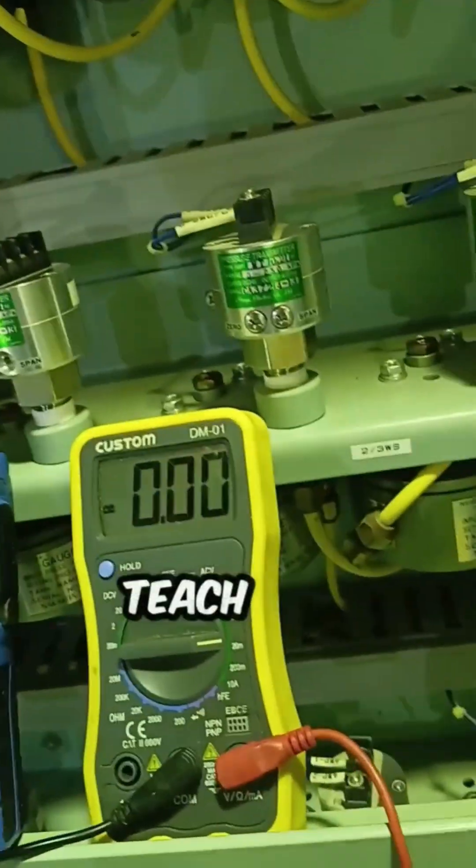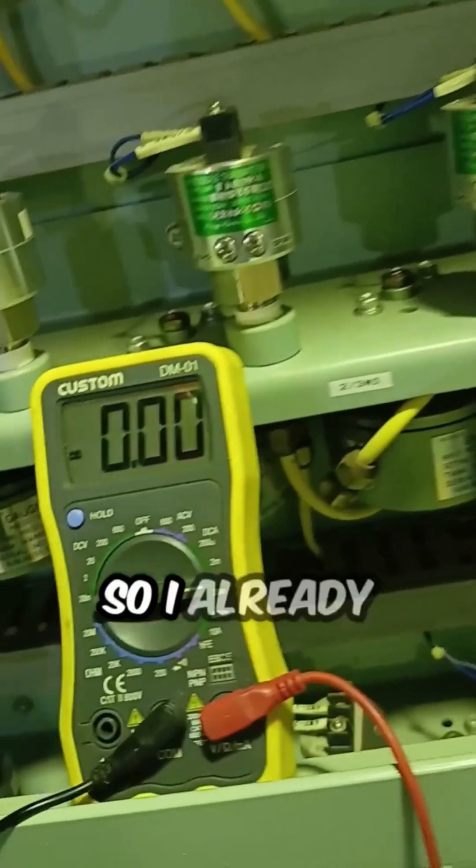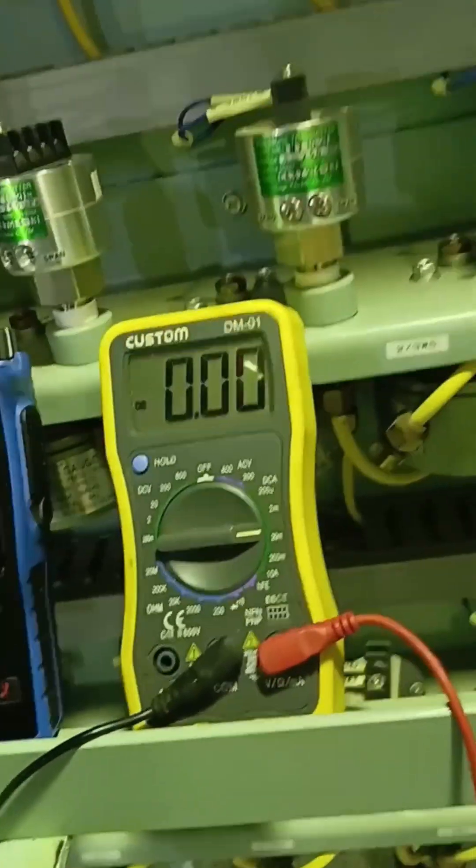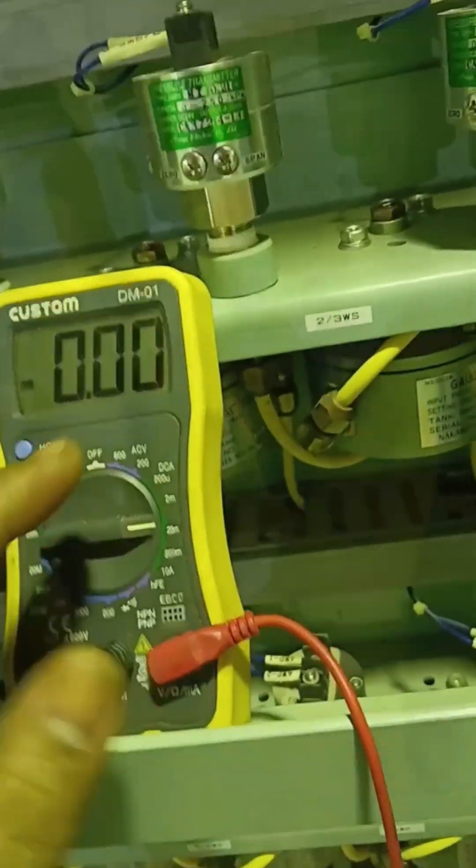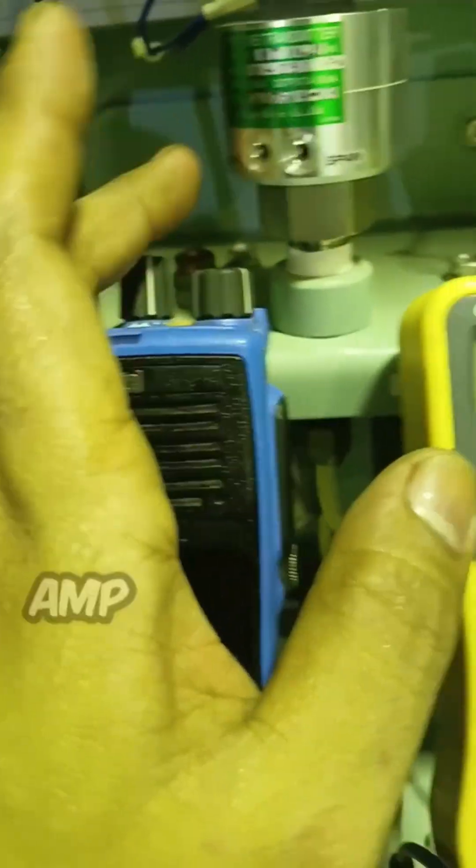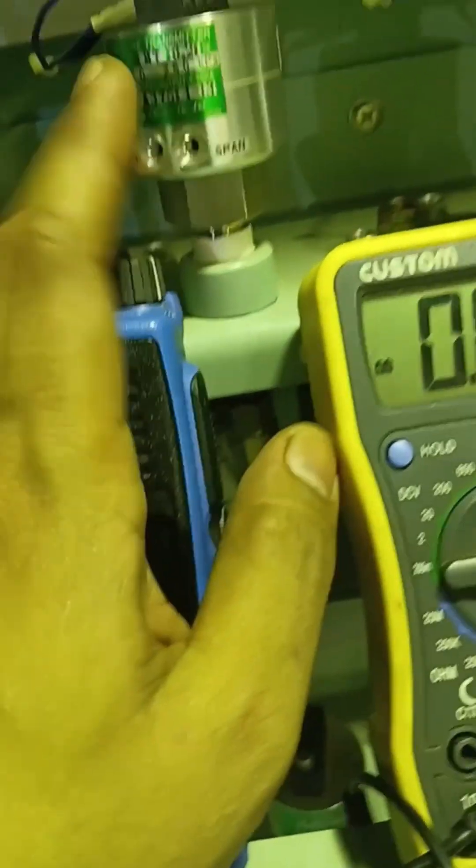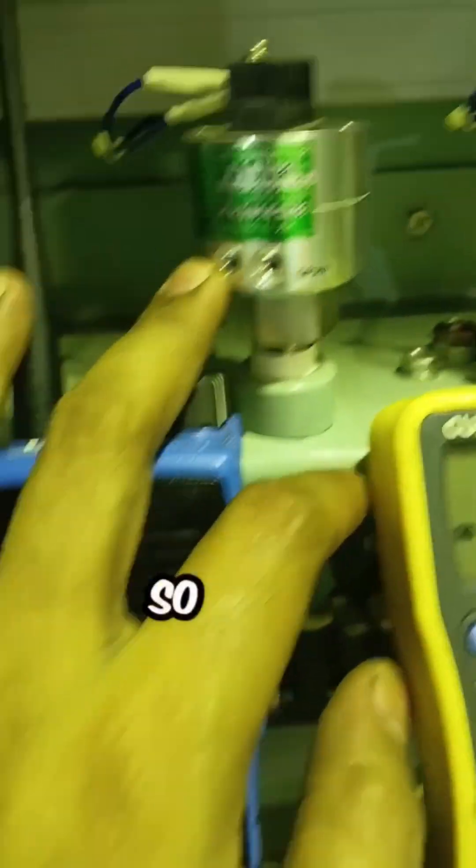So I already showed you, you didn't have to see the previous video. So I already explained here how to make a multimeter that can be, maybe I'm not sure. At empty tank, so of course there's no pressure on the system of the transmitter, so zero.